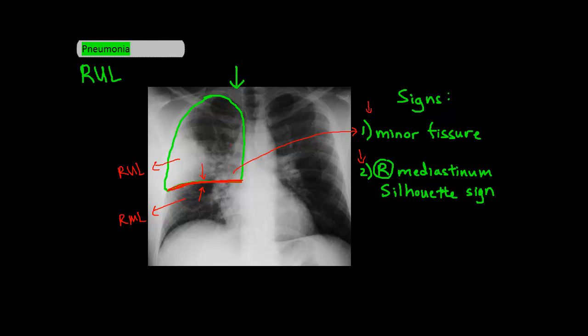The other sign is the silhouette sign of the right mediastinum. This is because the right upper lobe borders the right mediastinum, and the presence of pneumonia in the right upper lobe can sometimes lead to the disappearance of the right mediastinal border.